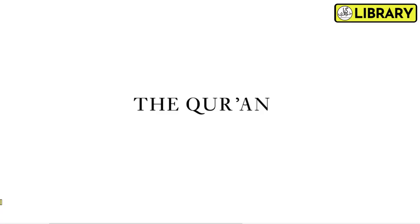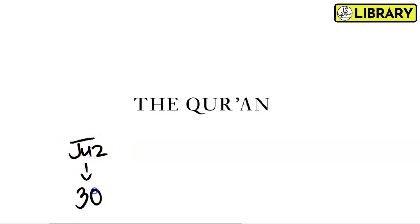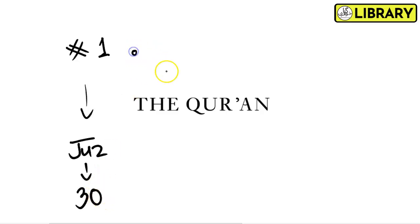The videos are going to be numbered in a very structured manner. The first number after the hashtag would be the Juz, which is the bigger section of the Quran. There are 30 Juz in total, so the first number ranges from 1 to 30.